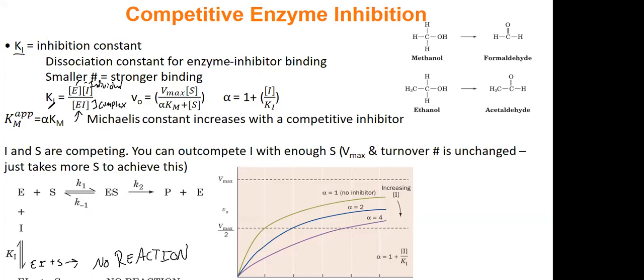So the bigger the denominator, the smaller the fraction. The bigger the denominator, the more enzyme inhibitor complex you have, the better your inhibitor works. So smaller numbers, stronger binding. And when we look at the Michaelis-Menten equation for initial velocity, when we talk about competitive inhibitors, we put this alpha multiplied by Km. And what this alpha is, it's one plus free inhibitor divided by KI.